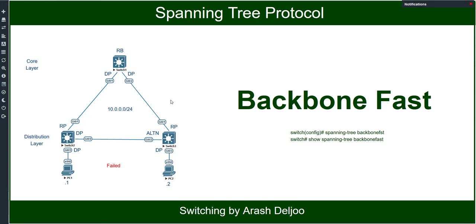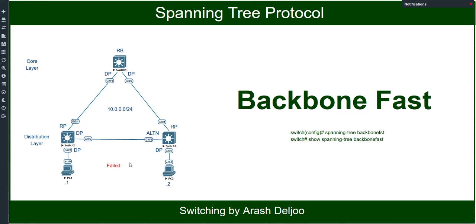For example, assume we have a simple scenario with Switch1, Switch2, and Switch3. Switch1 is our root bridge, so its ports are designated ports. In Switch2, Gigabit01 is the root port and Gigabit02 is the designated port. In Switch3, Gigabit01 is the root port and Gigabit02 is the alternate port. Assume that the link between Switch1 and Switch2 fails.